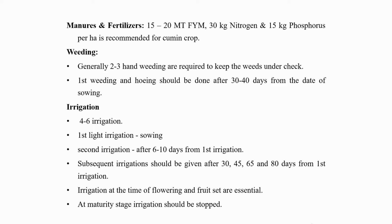After that, apply manures and fertilizers to the bed. 15 to 20 metric tons of farm yard manure, 30 kg nitrogen and 15 kg phosphorus per hectare is recommended for cumin crop. All quantity of farm yard manure should be mixed into the soil at the time of land preparation. 15 kg nitrogen and all quantity of phosphorus should be applied as basal dose, and another 15 kg nitrogen should be applied as top dressing one month after germination of seeds.